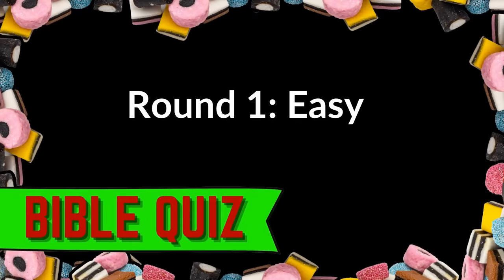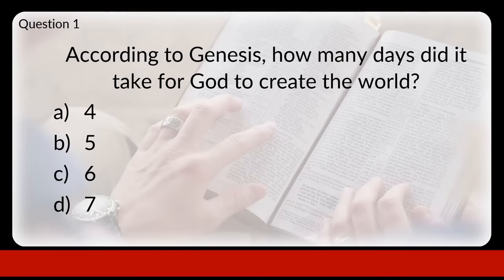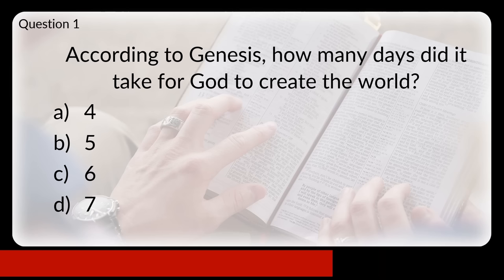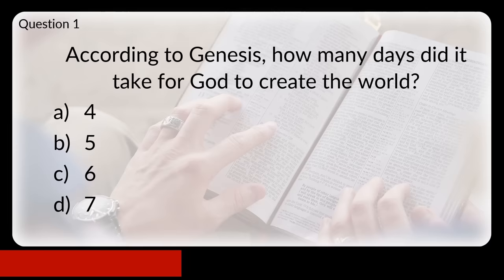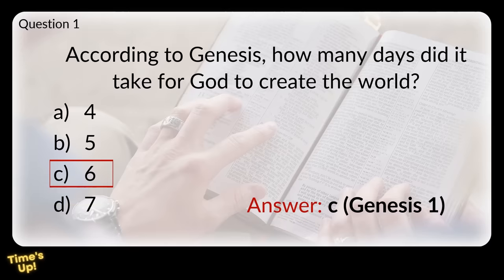Here are ten easy questions. Question one: according to Genesis, how many days did it take for God to create the world? Was it four, five, six, or seven? The answer was six.